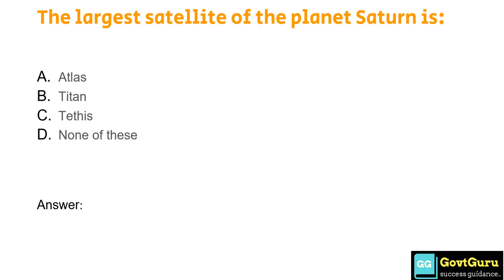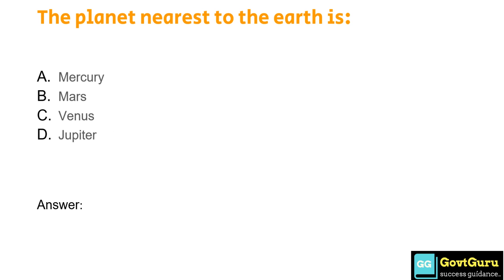The largest satellite of the planet Saturn is: Option A: Atlas, Option B: Titan, Option C: Tethys, Option D: None of these. The answer is Option B, Titan. The planet nearest to the Earth is: Option A: Mercury, Option B: Mars, Option C: Venus, Option D: Jupiter. The answer is Option C, Venus.